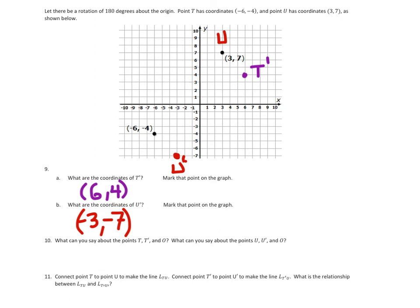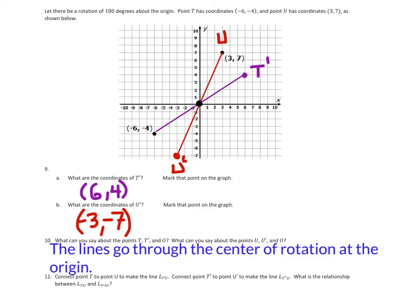Number 10: what can you say about the points T, T prime and O, and also U, U prime and O? Let's connect those to make a line. What we should notice is that these two lines go through the center of rotation, which is at the origin. Connect point T to point U to make line TU, then connect T prime and U prime to make line T prime U prime. What is the relationship between the two lines? These green lines—we should be able to see that these two are parallel.